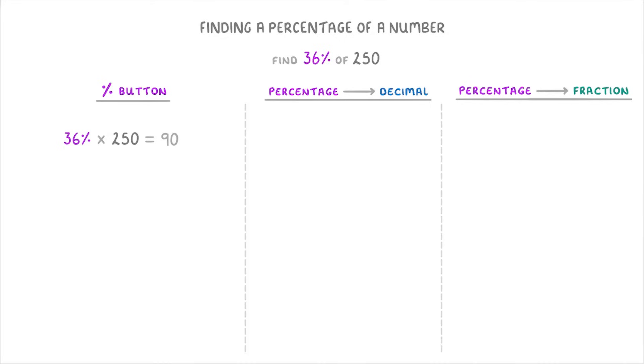To use the decimal technique though, we'd do 36 divided by 100 to get 0.36, and then multiply that by 250 to get 90 again. Or finally for the fraction technique, we'd do 36 over 100 to put it into a fraction, and times that by 250 to once more get 90.